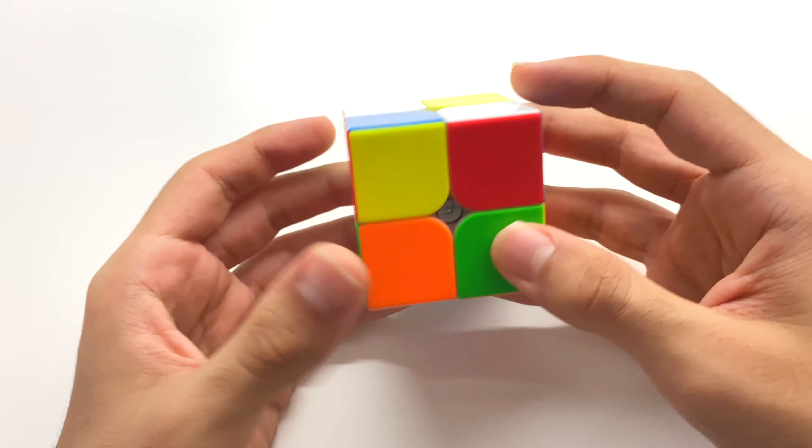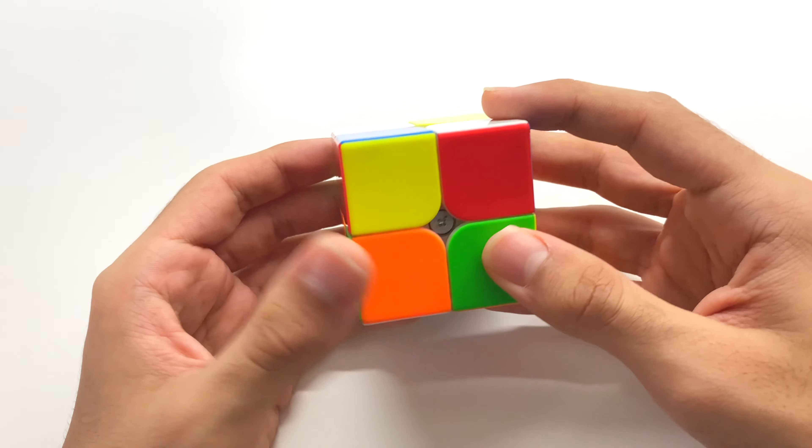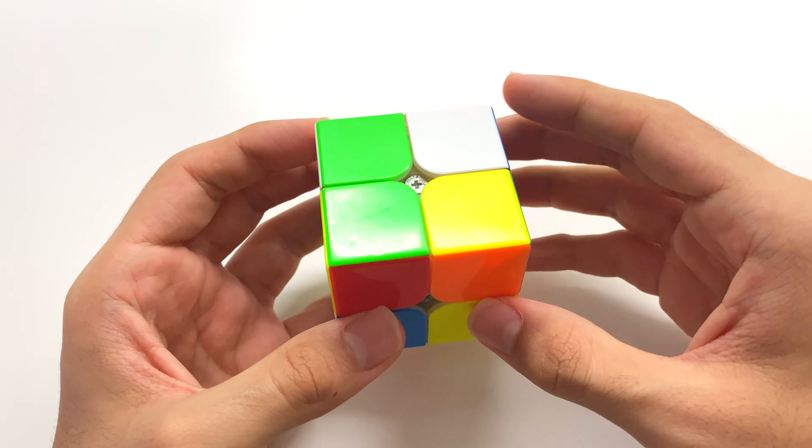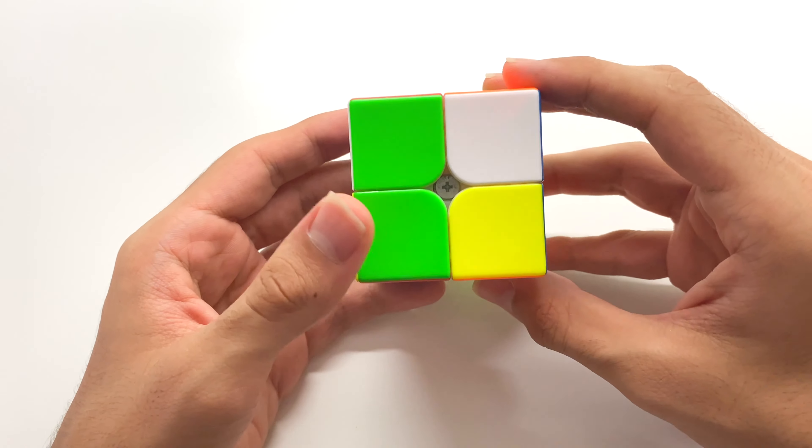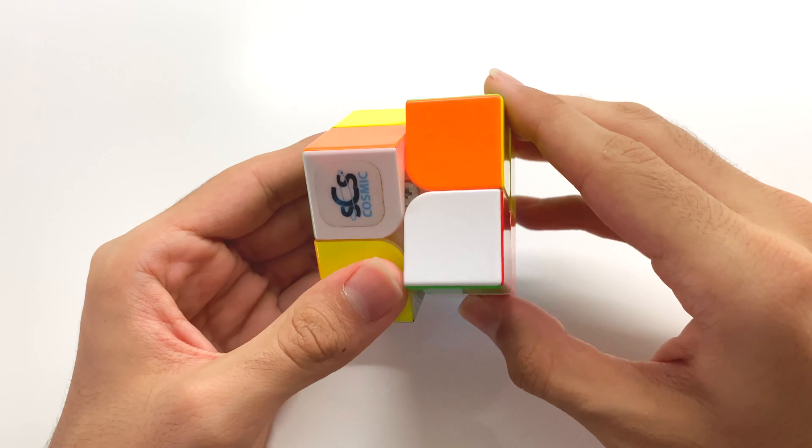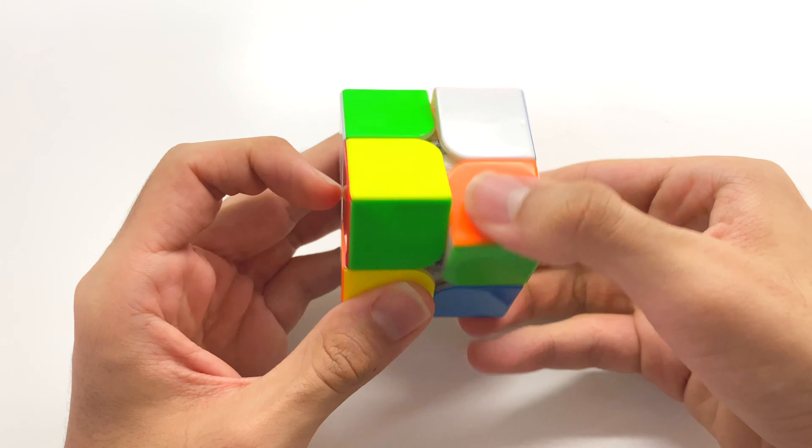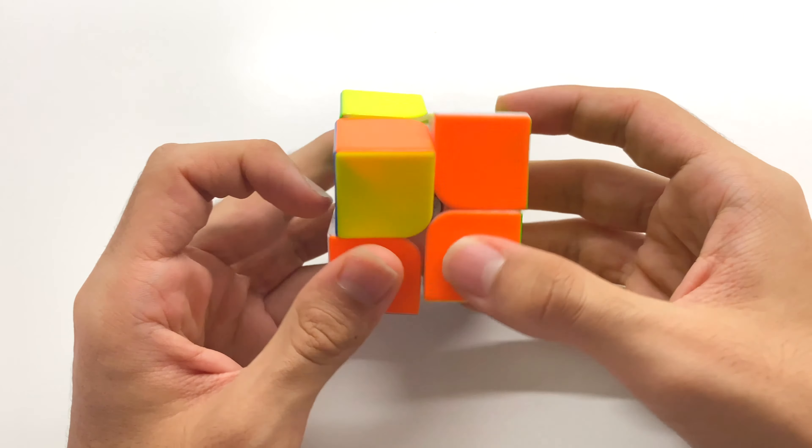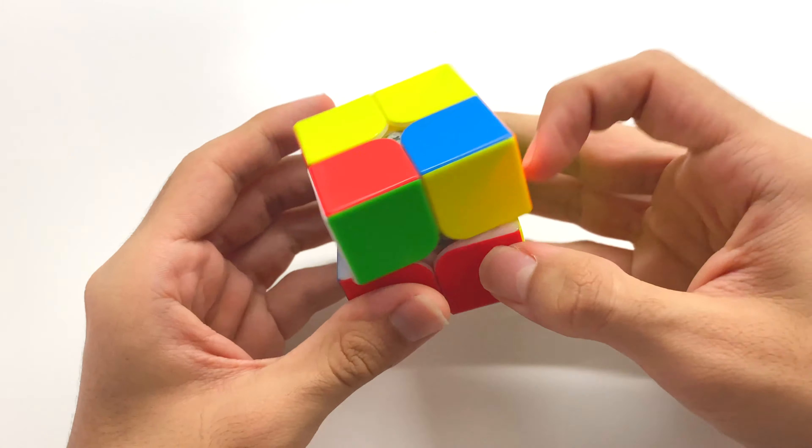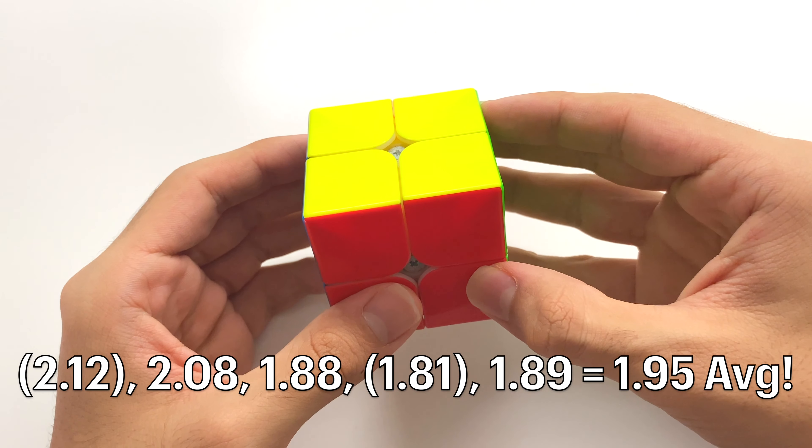On this last solve here, I saw a pretty good blue 4 move EG1 face which would give me a pretty good EG1. However, the bar would be in the front so I decided to execute it from the back from here. What I did was F, R prime, U, R to insert the piece into the back and I cancelled into this EG1 algorithm that I knew. This was an alternate algorithm because I use a different algorithm usually. This gave me a time of 1.89 seconds which gave me an average of 5 of 1.95.